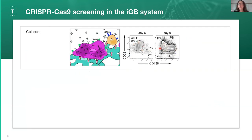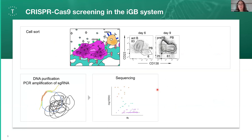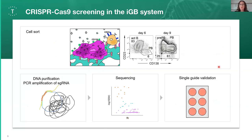So you sort your populations of interest, isolate the DNA, PCR-amplify your sgRNAs, perform bioinformatical analysis, and then in the end you want to do single guide validation, proving that it's not an off-target effect of your pool library that you saw, but actually an effect of your specific guides. Let's look into all of those steps in detail.